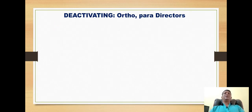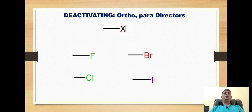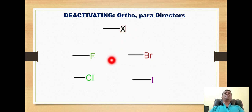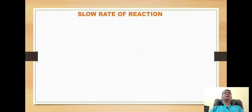The last group is the deactivating groups that are ortho-para directors. The single example from this category is the halogens: fluorine, chlorine, bromine, and iodine. Halogens are electronegative elements, so they decrease the electron density on the benzene ring and deactivate the aromatic ring, but like activating groups, they also tend to release electrons toward the aromatic ring, so substitution takes place at the ortho and para positions.